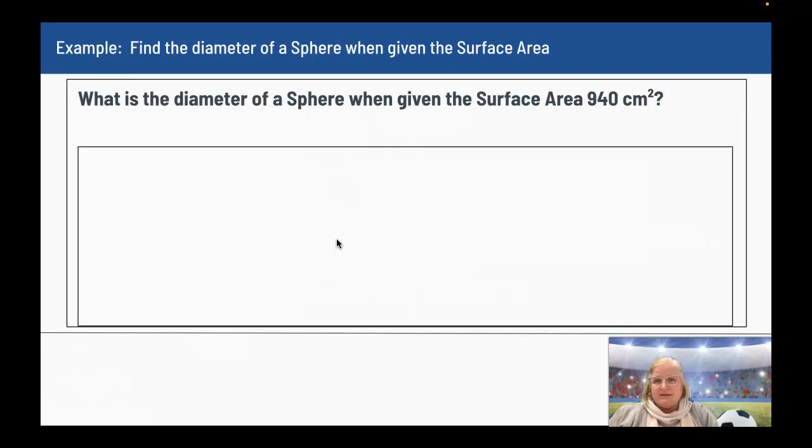What is the diameter of a sphere when given the surface area 940 centimeters squared? So this is going backwards. I'm given the surface area. I'm not looking for it, but I still use that formula that the surface area is equal to 4 pi r squared.